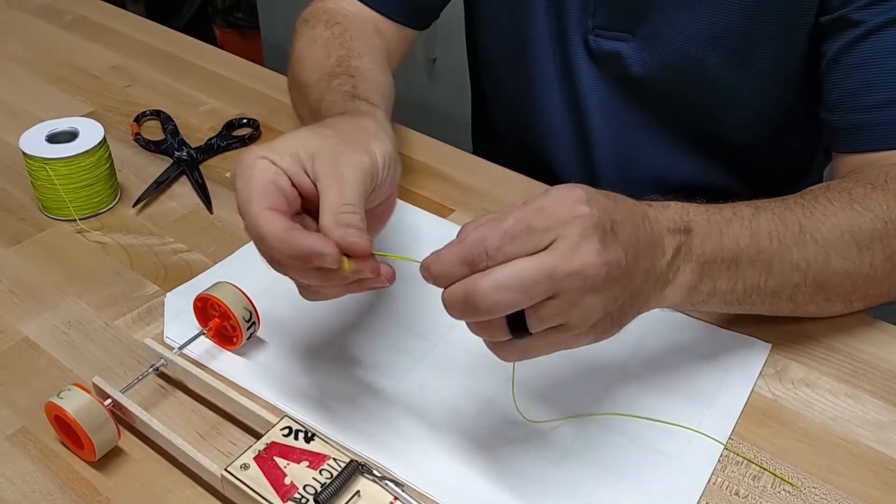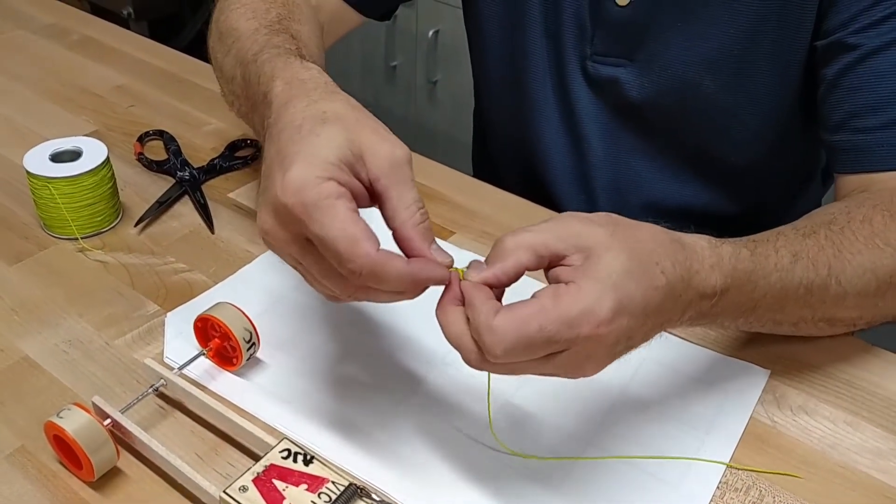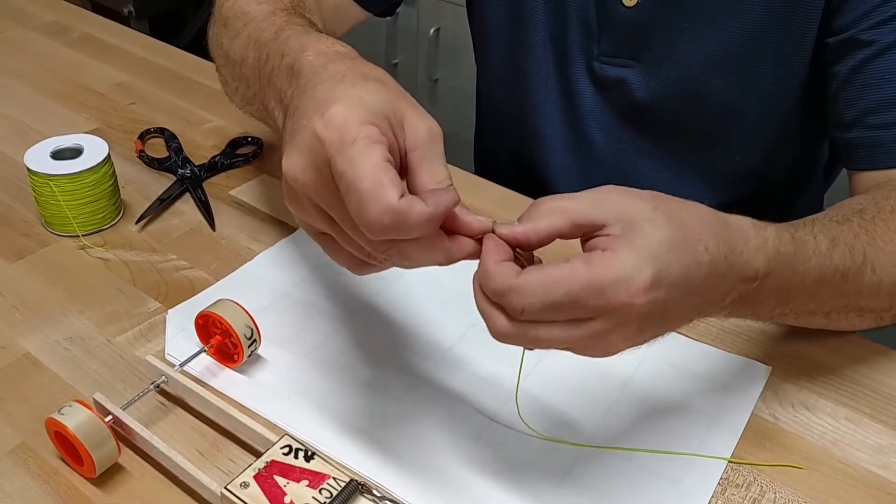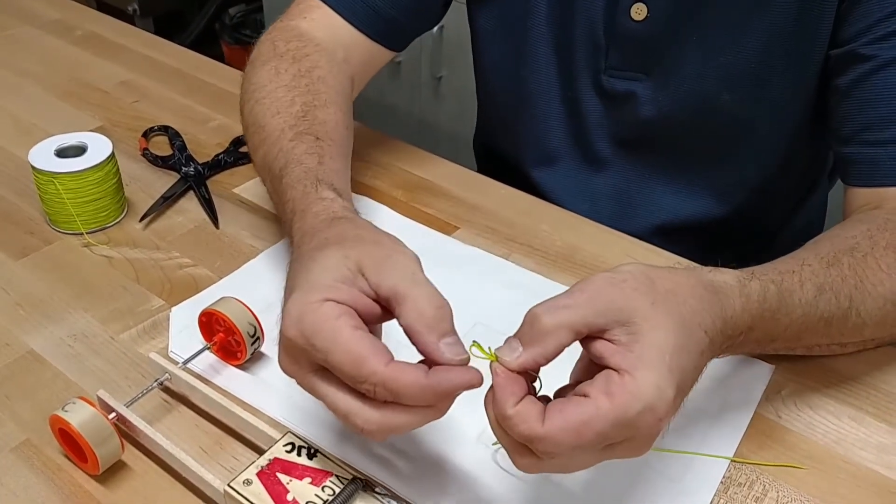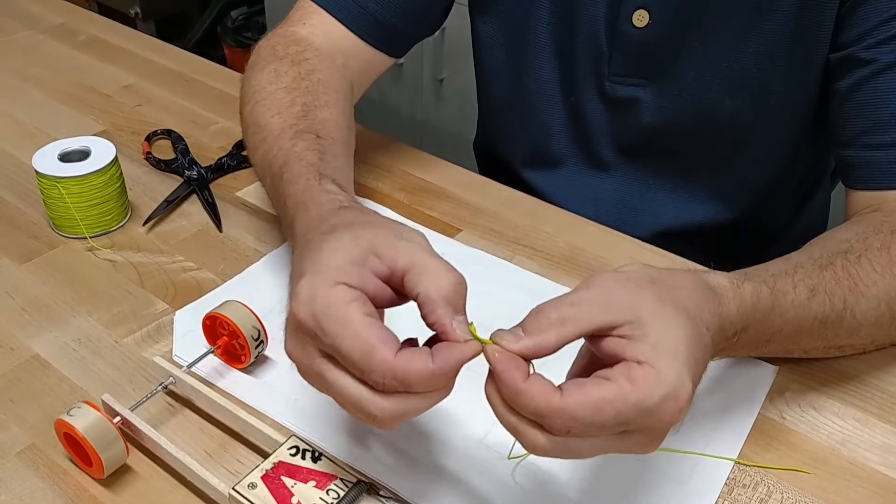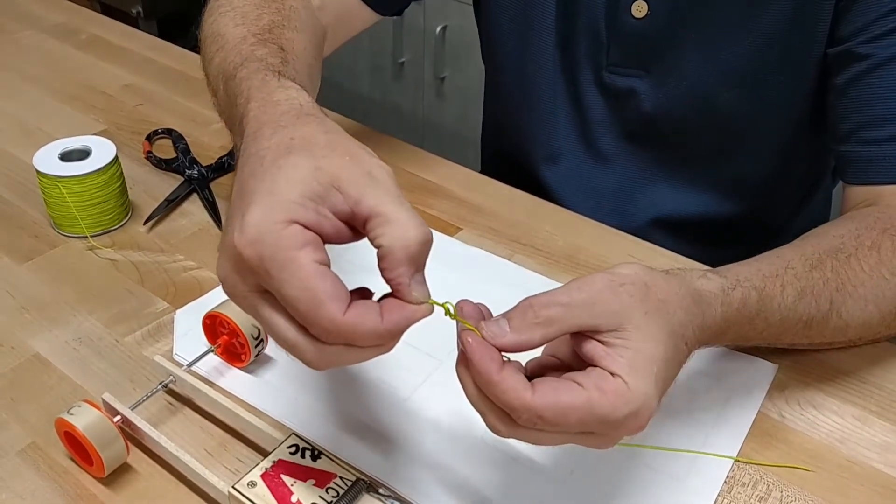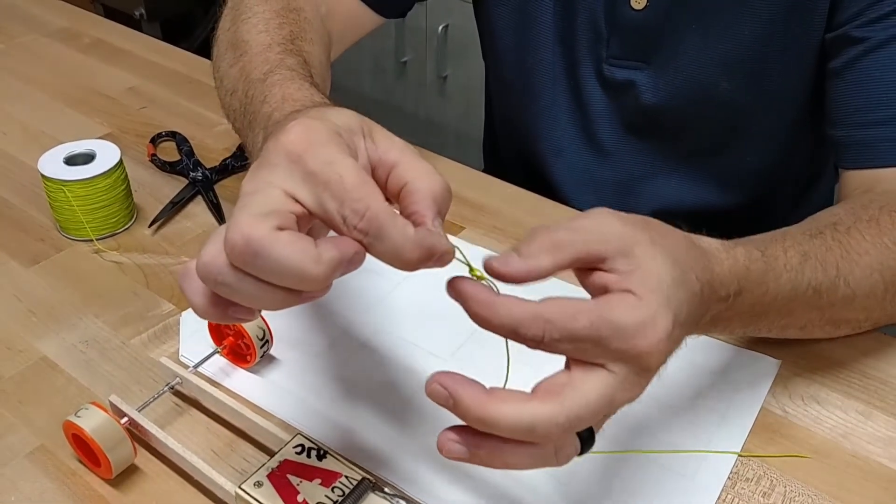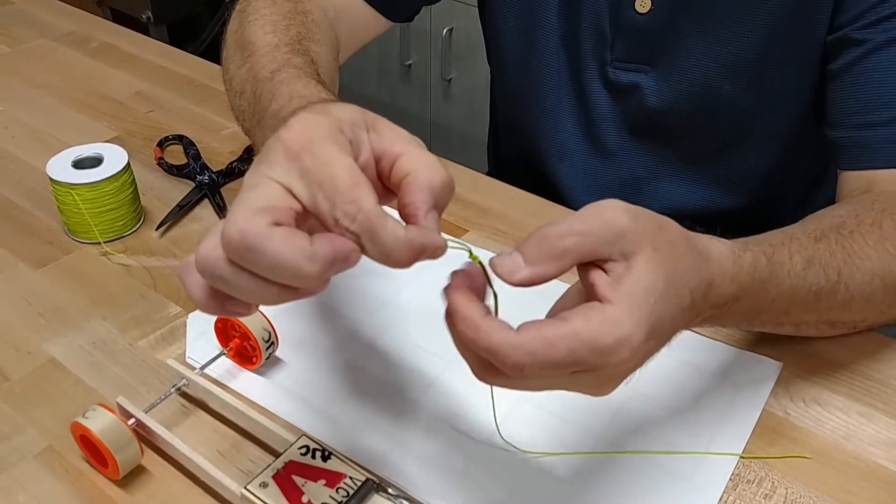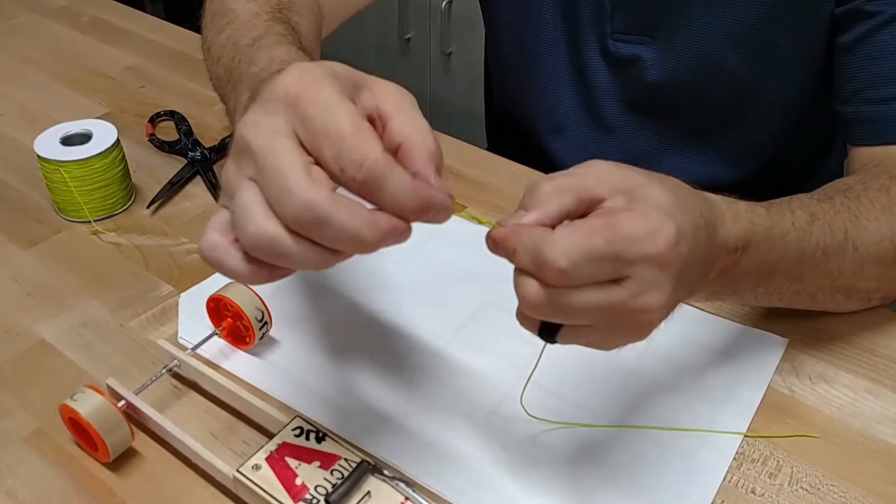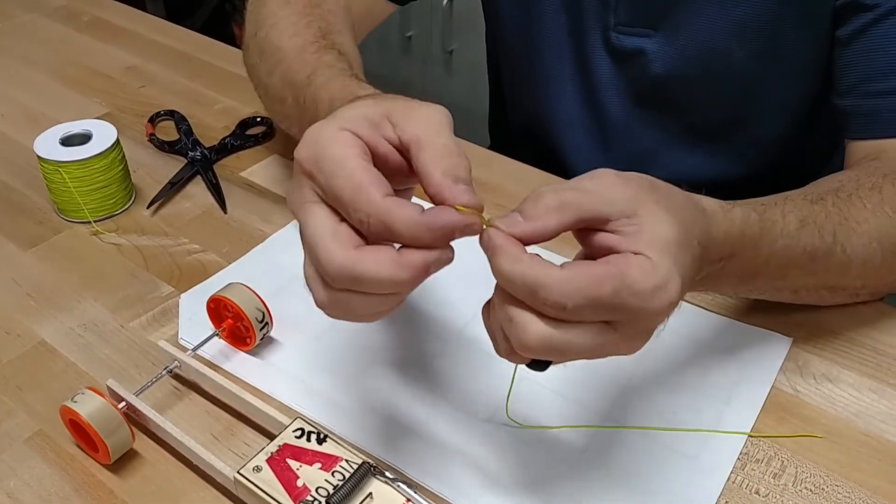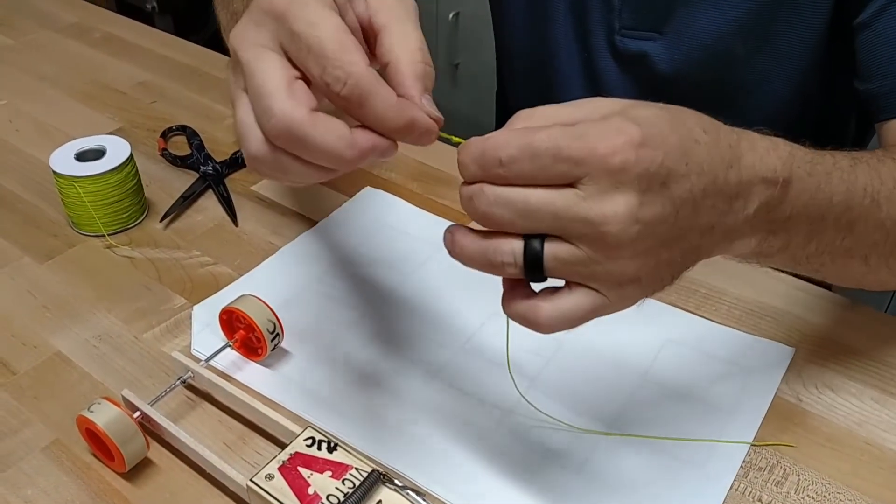So then I'm just going to tie it like I would tie anything else, and I'm going to tuck this little loop right back through here. You'll see, just like tying a knot like that. I hope you can see that. And now I've got a knot that won't slip. Works perfect.